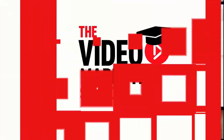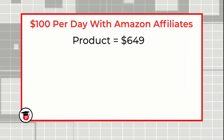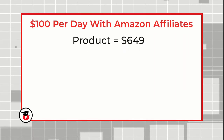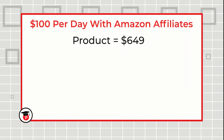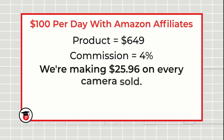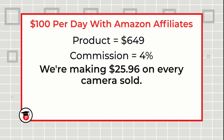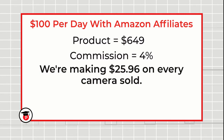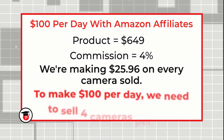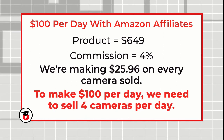Let me show you how it works. For example, if we're selling a camera worth $649 and our commission is 4%, then we're making $25.96 on every camera sold. In order to make $100 per day on YouTube with your Amazon affiliate link, you only need to sell 4 cameras per day.